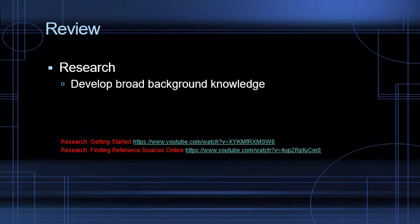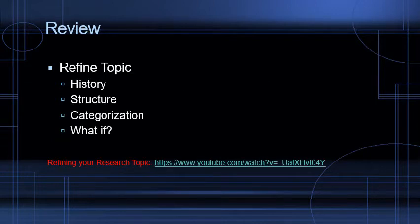Once we've gotten some keywords and phrases and thought about people and places we might look to for information about our topic, we start developing a broad background knowledge, looking for different types of sources — everything from basic factually oriented reference materials to more complex scholarly debates about the subject. Once you've gotten some sense of the broad background and landscape of the topic, you start refining your topic.